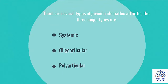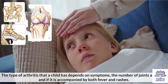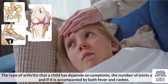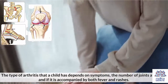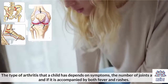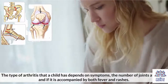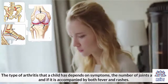There are several types of Juvenile Idiopathic Arthritis. The three major types are Systemic, Oligoarticular, and Polyarticular. The type of arthritis that a child has depends on symptoms, the number of joints affected, and if it is accompanied by both fever and rashes.